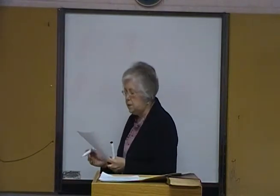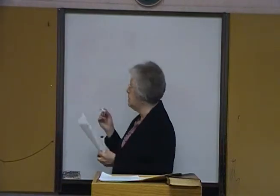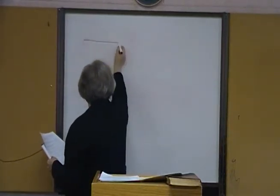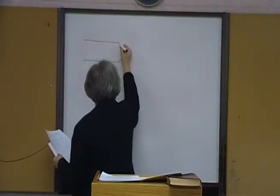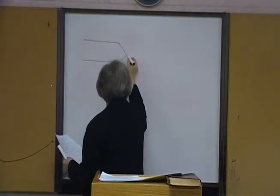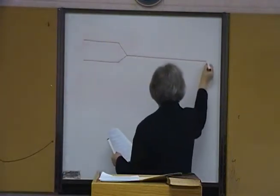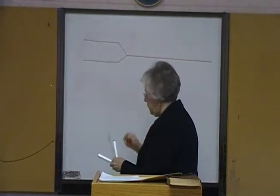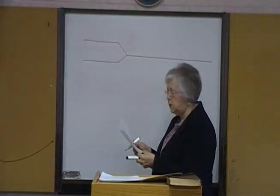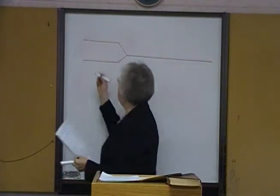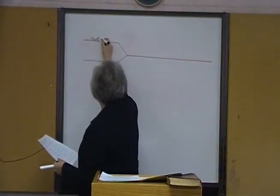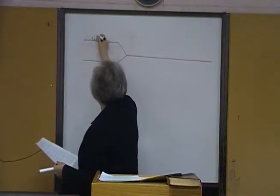In sentence number six, you have a compound subject, and remember we have that double construction for compound subjects. Our compound subject: 'ridges' and 'trenches.' Diagram them in the order that they appear — ridges, trenches.